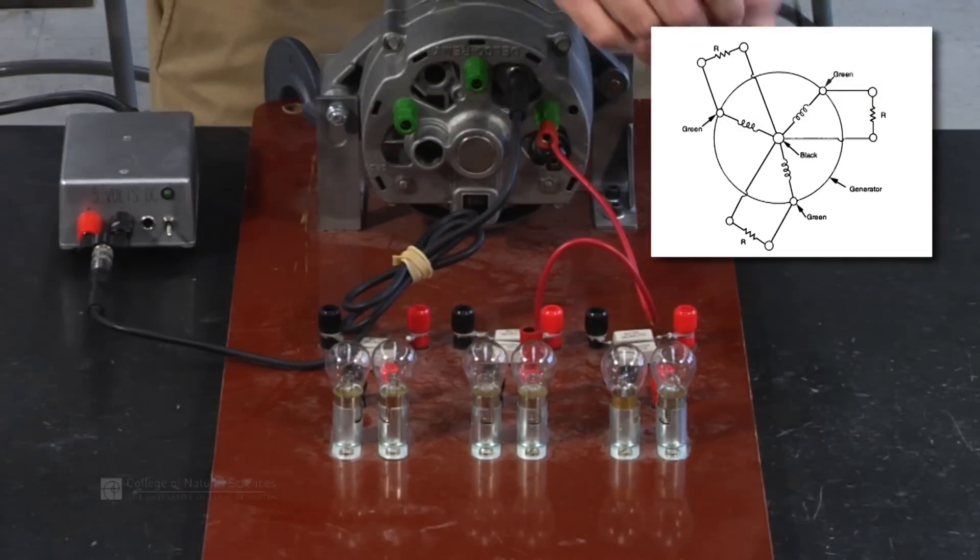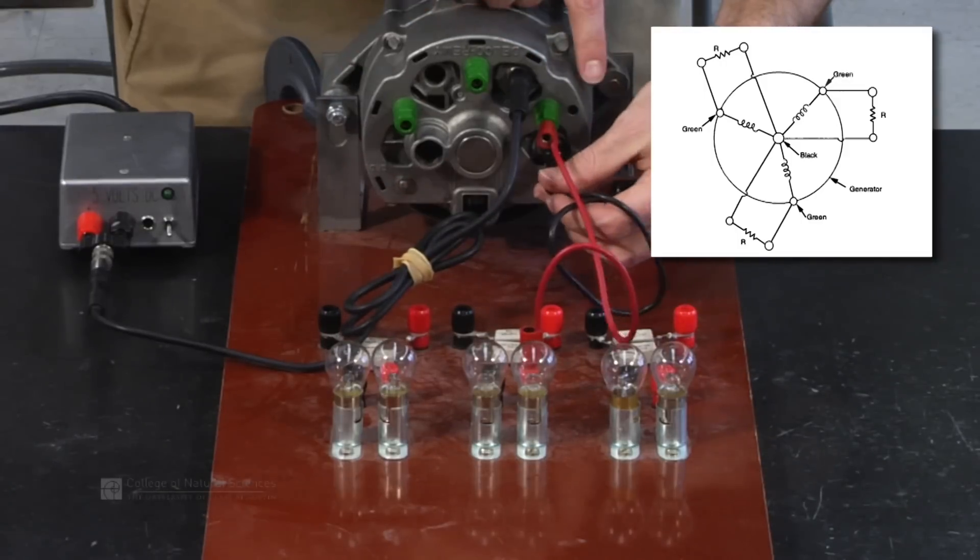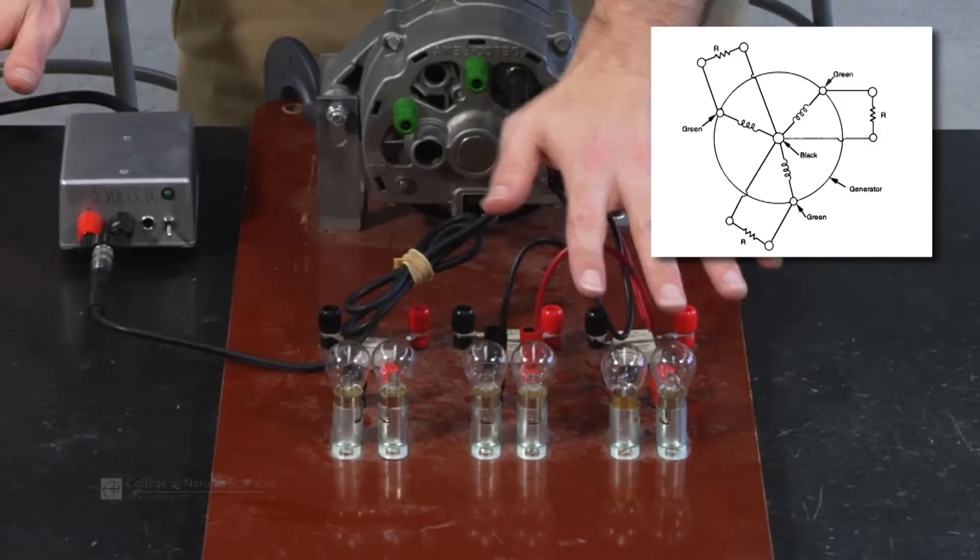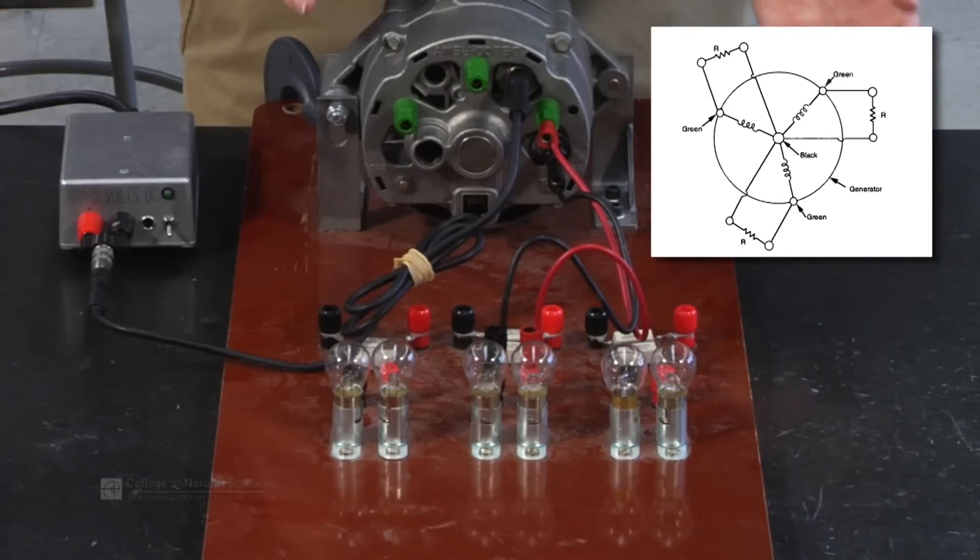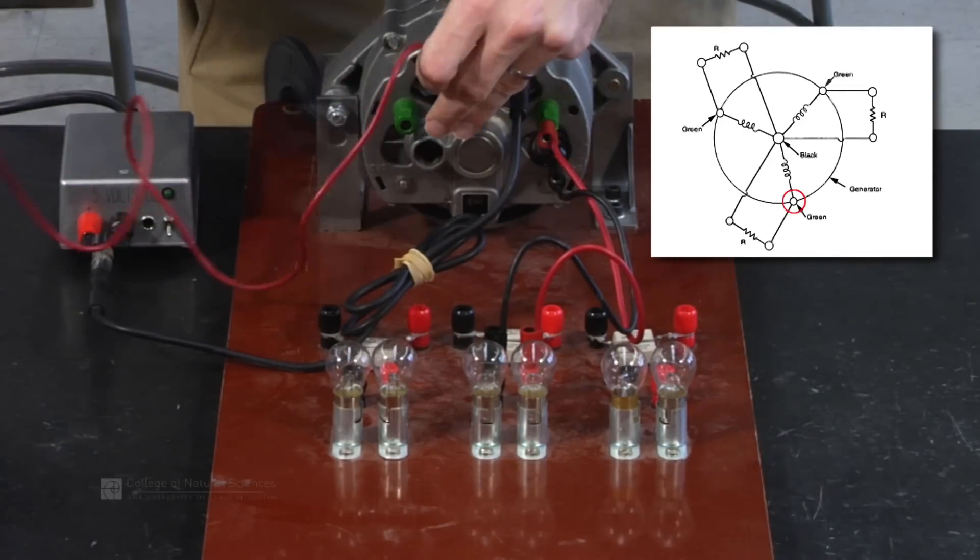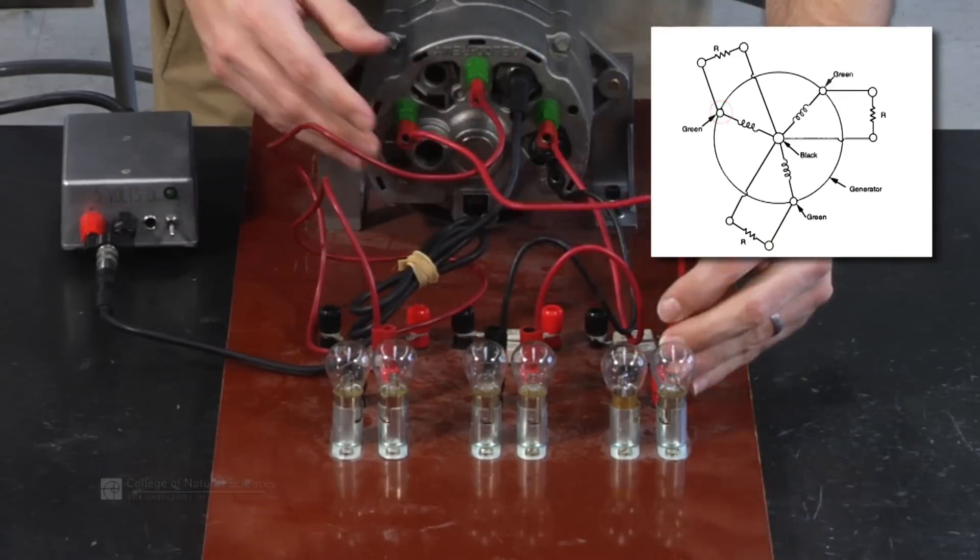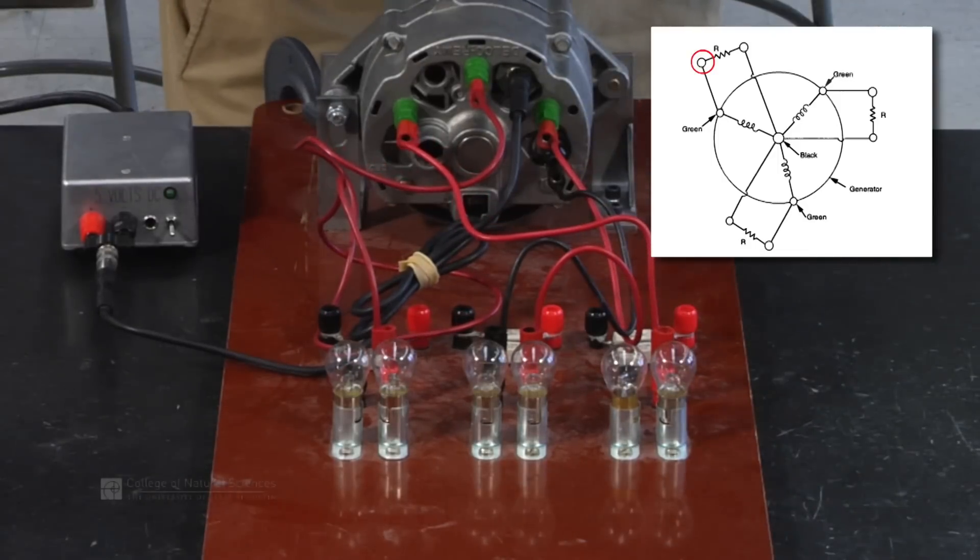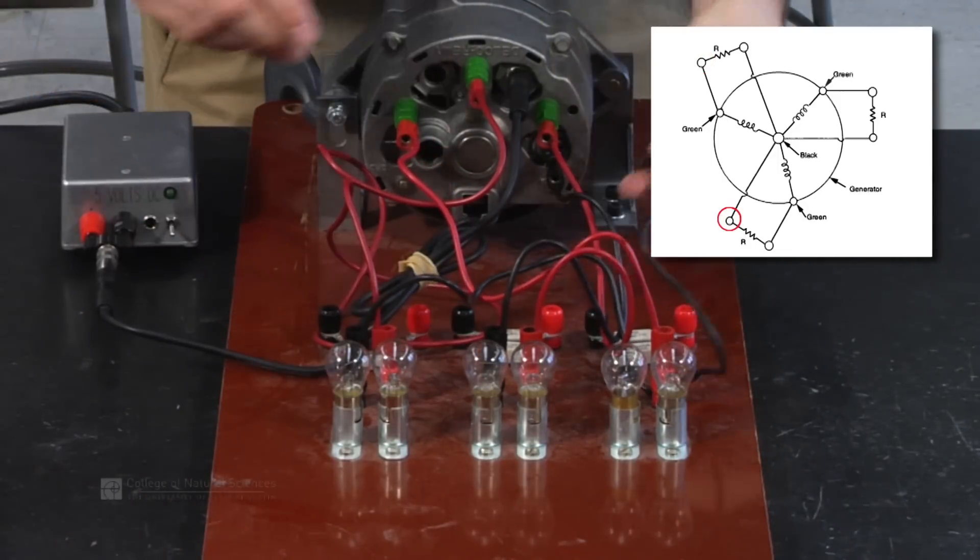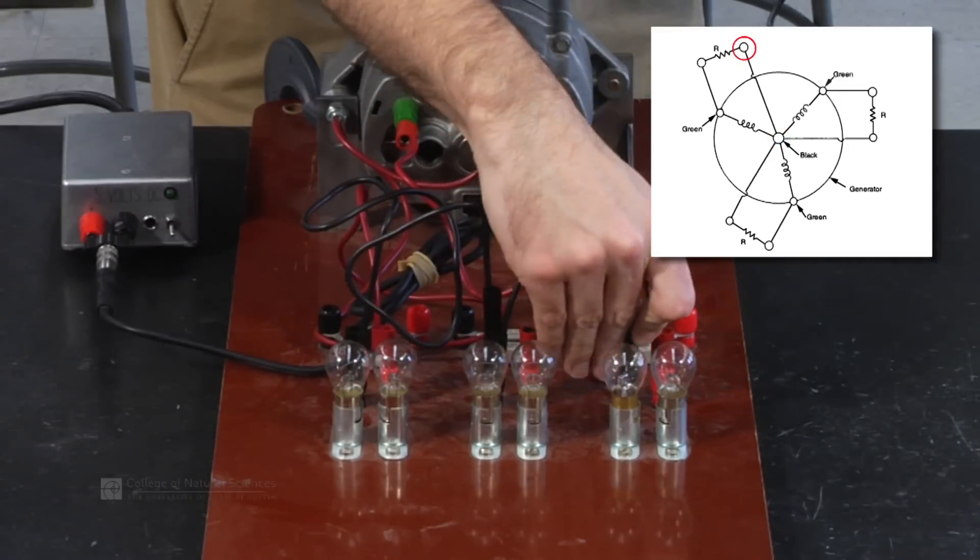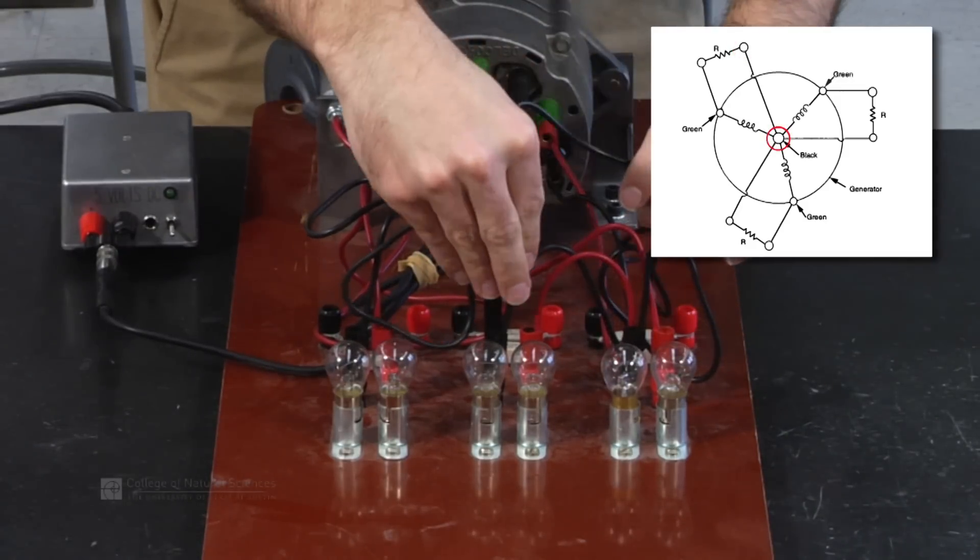And we're going to connect the ground, the black wire, to the black connector on the other side. And since we have three different sets of light bulbs, we can do the same thing with all three. And the ground is a common ground for all of them.